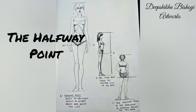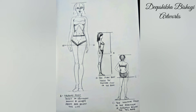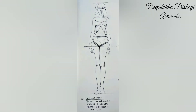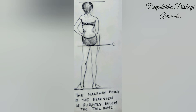The halfway point is without doubt the most important and useful proportion for drawing the figure — everything else depends on its correct placement. This major landmark belongs in your repertoire. Here's the essential axiom: the halfway point of the body is the pubic bone, that is the equivalent of the crotch. Half of the figure is above that point and half is below. In this picture, line A indicates the halfway point, with an equivalent amount of length above and below this line. The pubic bone marks the halfway point on the body, and in the rear view it is slightly below the tailbone.